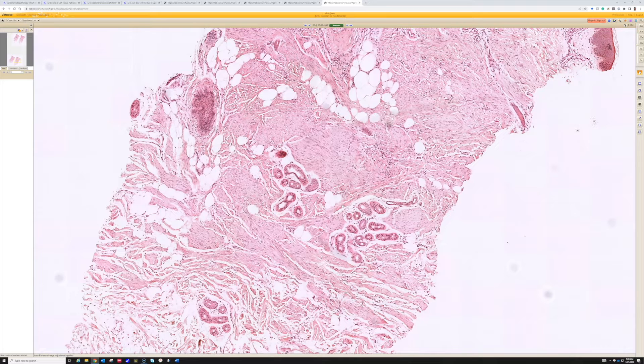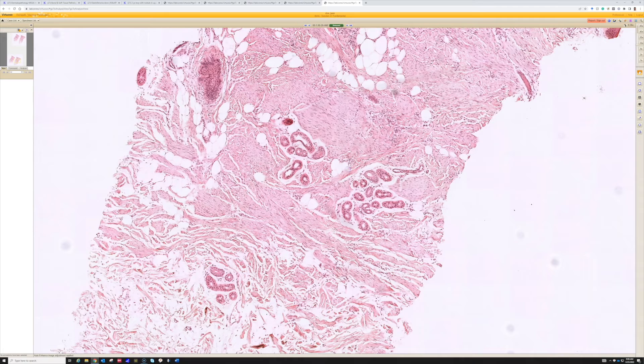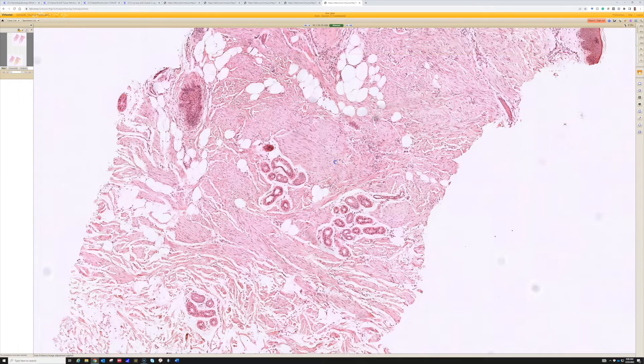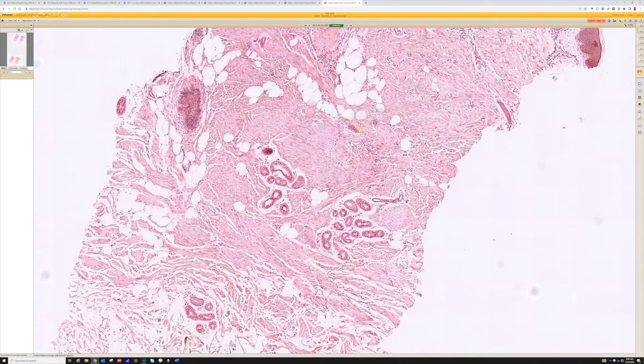And in any case, that's a topic for another video. But fibroblastic connective tissue nevus will be CD34 positive, and it often trickles down into the fat.